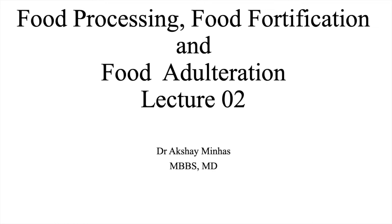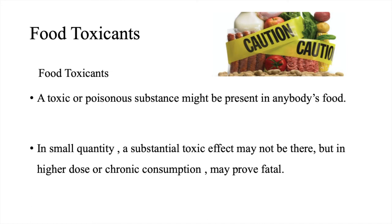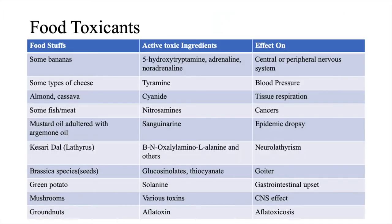Hello everyone. Today we will be covering the second part of food processing, food fortification, and food adulteration. Food toxicants — a toxic or poisonous substance might be present in anybody's food. In small quantities, a substantial toxic effect may not be there, but in higher doses or chronic consumption may prove fatal. So these are examples of a few food toxicants.